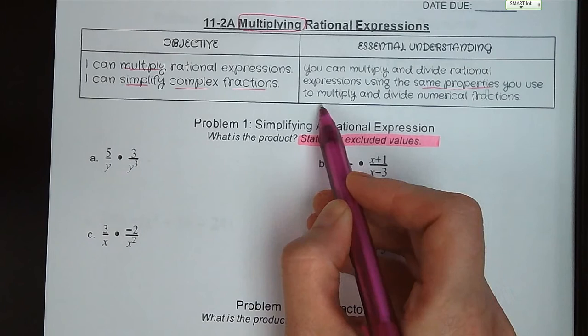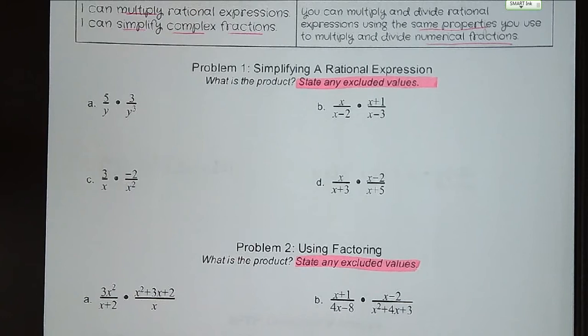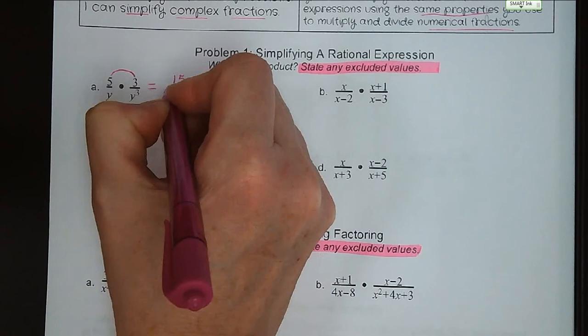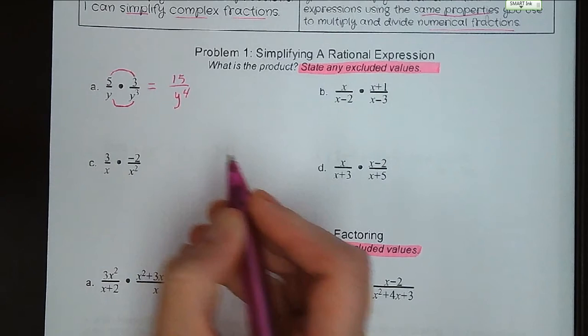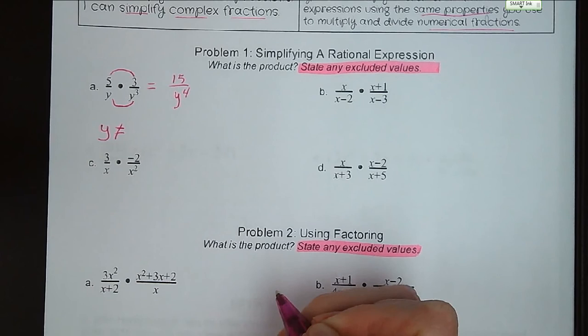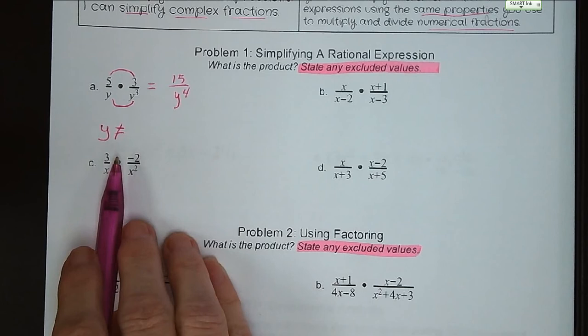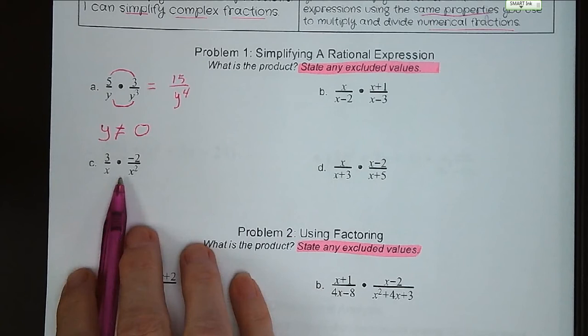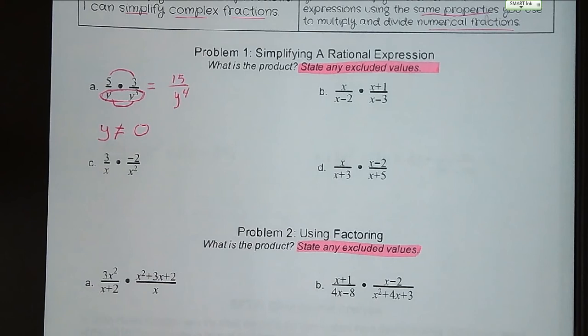Problem number one is simplifying a rational expression. We want to know what is the product and state any excluded values. Just like whenever we multiply fractions, we multiply the numerators across, multiply the denominators across, and then simplify if we can. So 5 times 3 is 15, y cubed times y is y to the 4th. There's nothing for us to simplify, and our excluded value is 0. Remember, excluded values are anything that would make our denominator 0, so the denominator in any part of these.